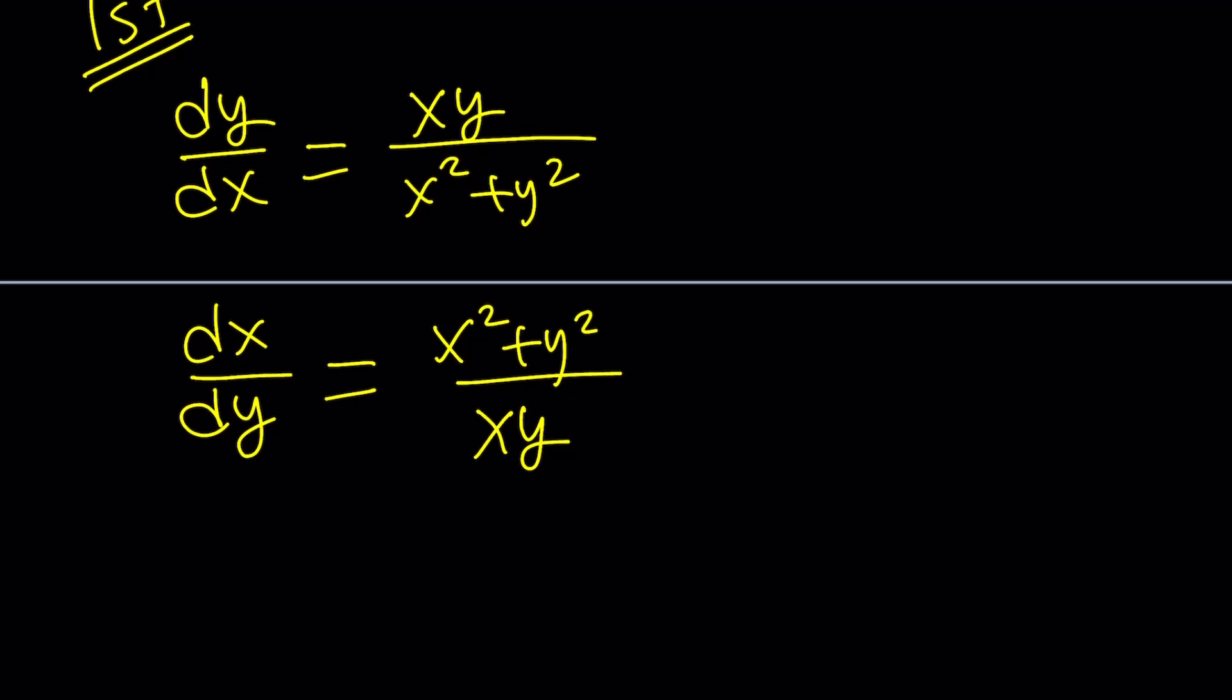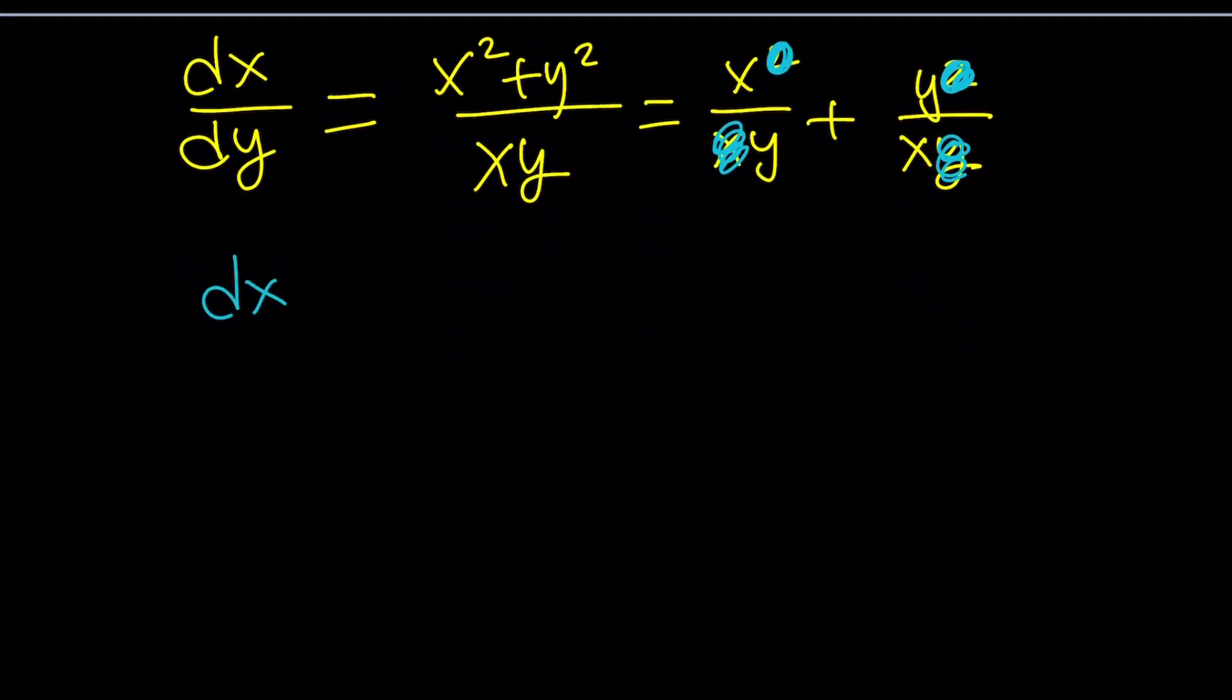The idea is to get the product in the denominator so we can separate this into two fractions. So this becomes x²/xy + y²/xy. Here we can cancel some terms. x² - one cancels out. y² - one cancels out. So we end up with something interesting: dx/dy = x/y + y/x. Awesome.